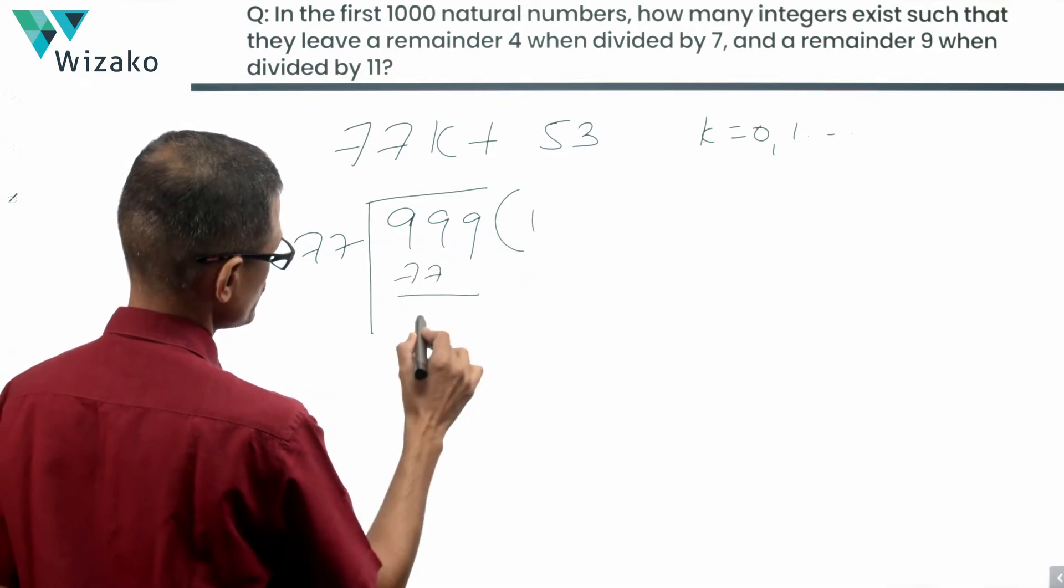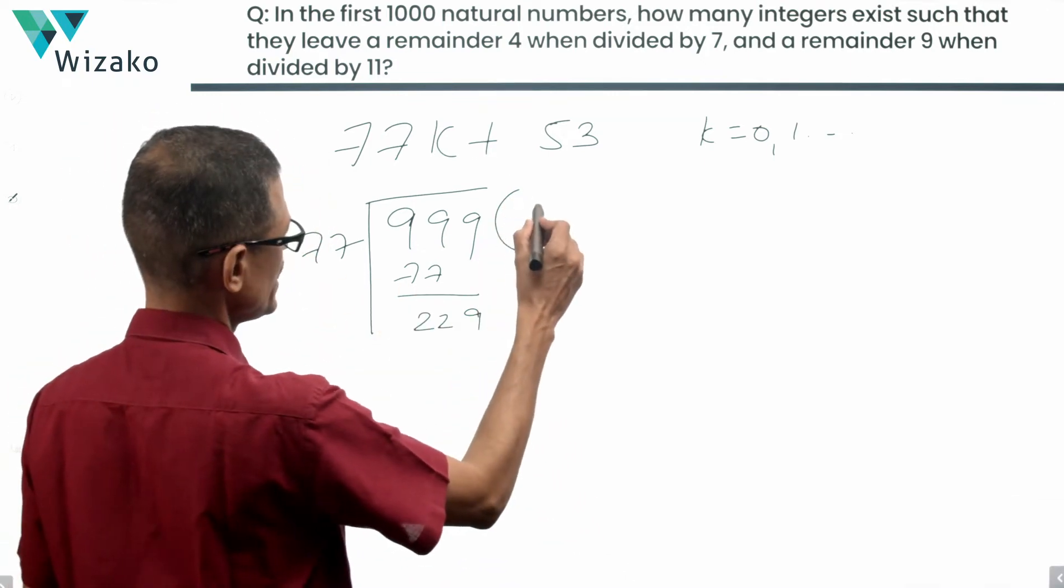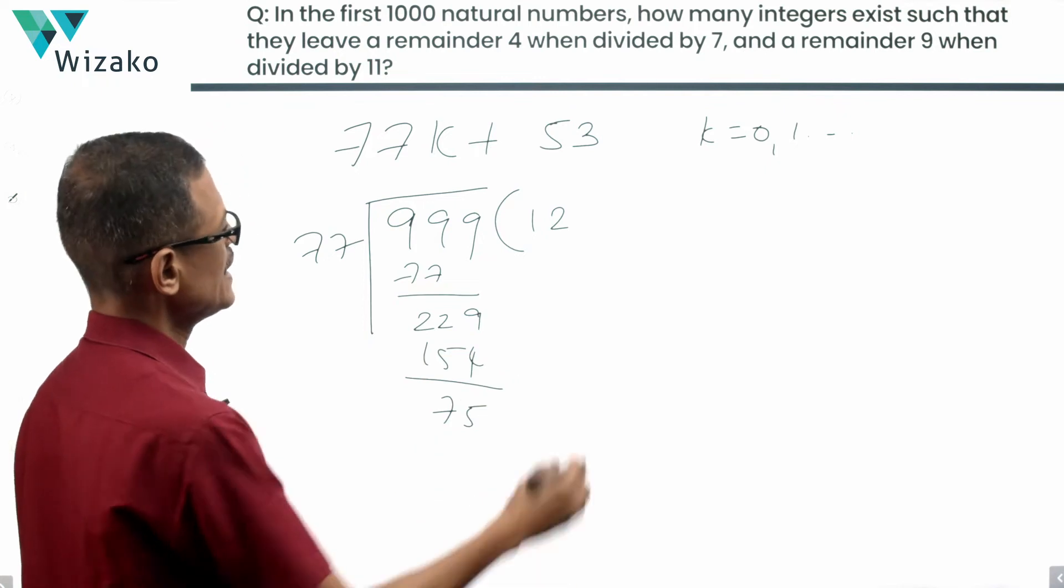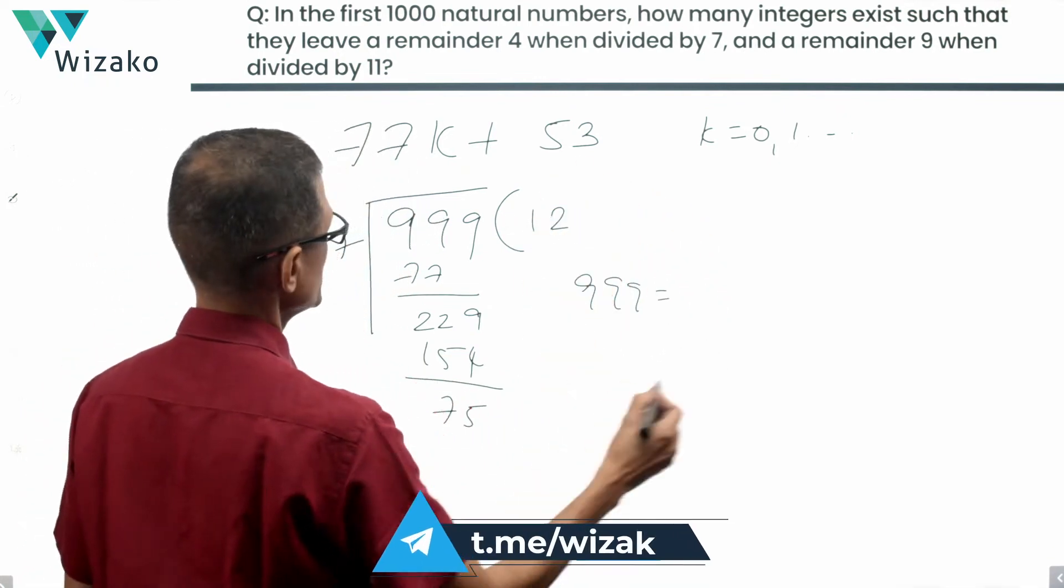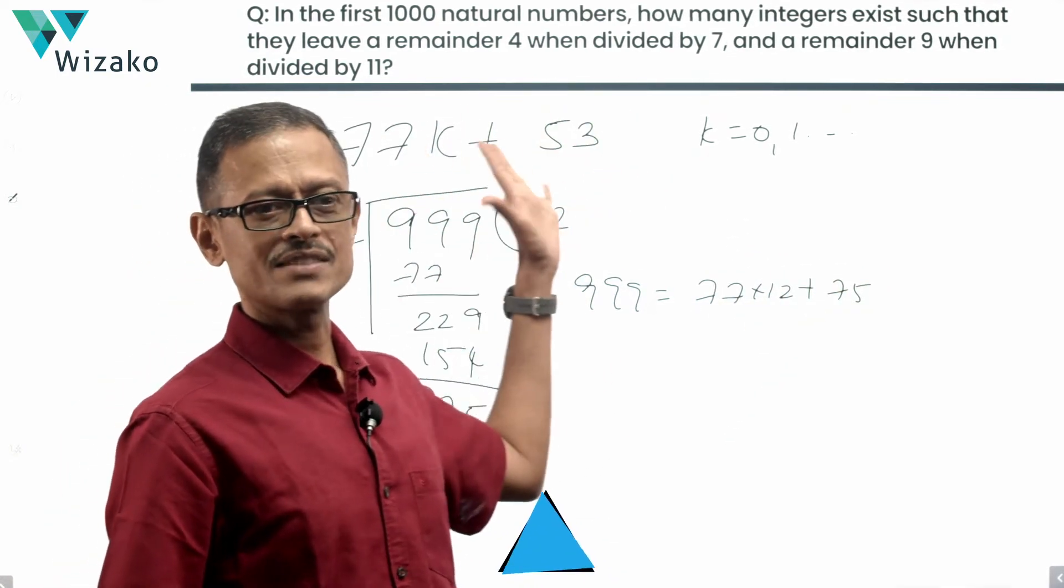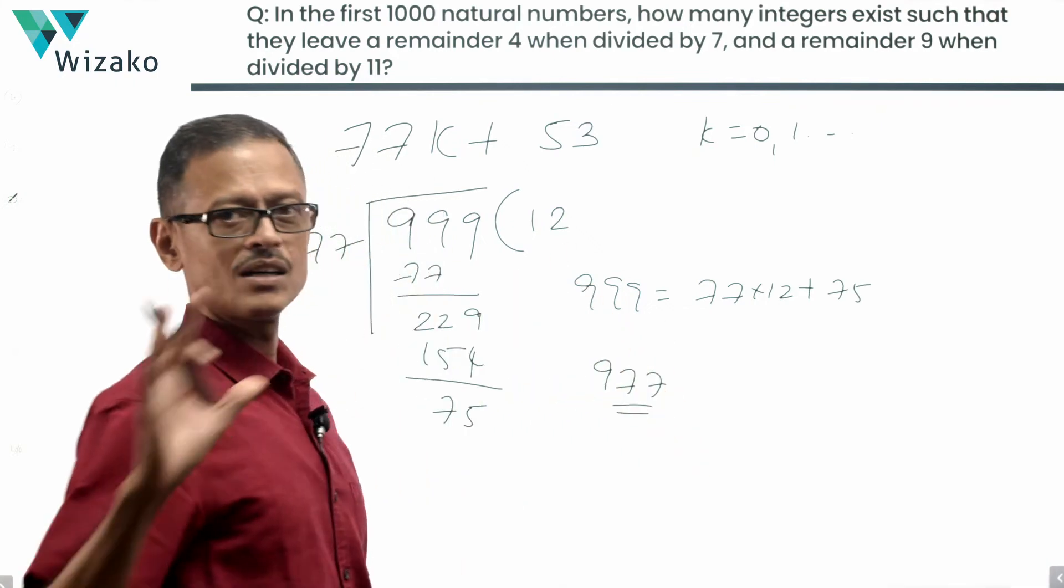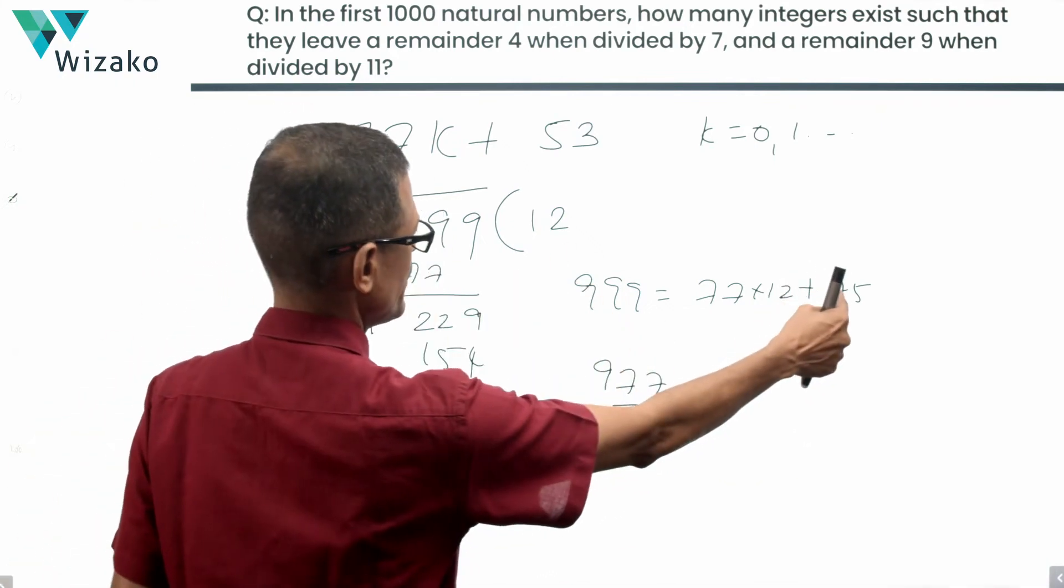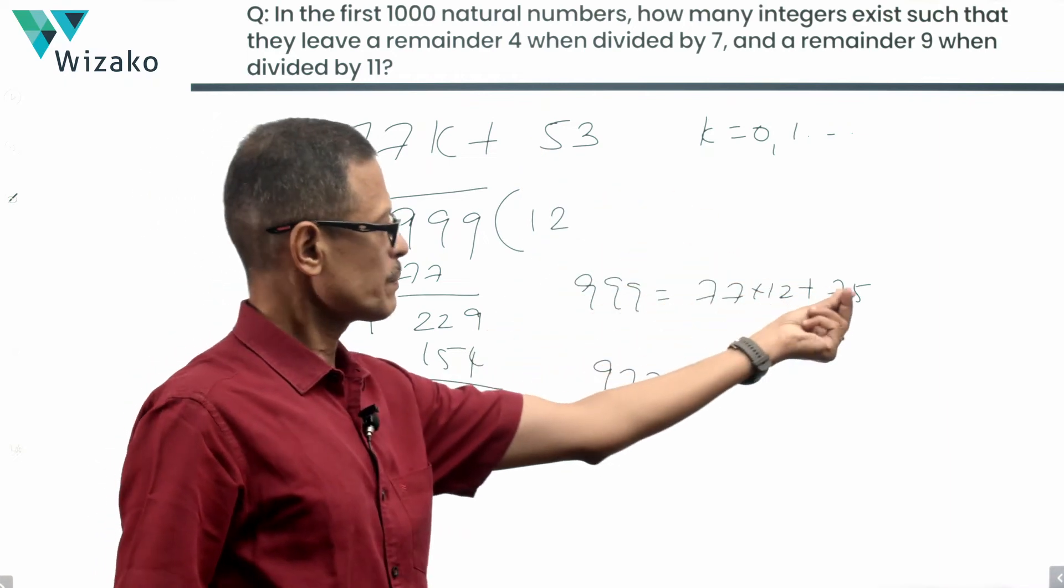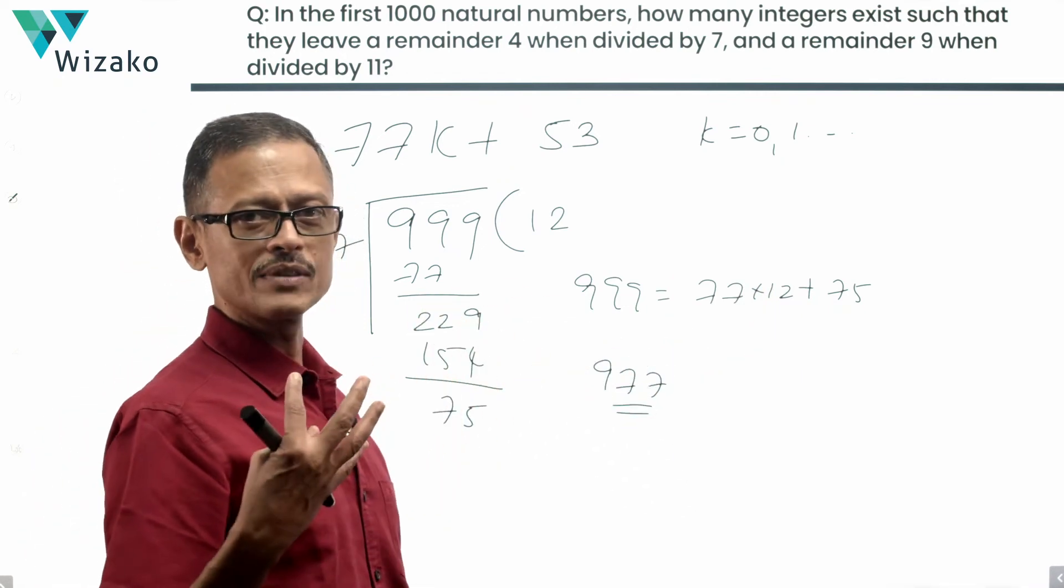Once this will make it 77 leaves us with 22. 229. 77 into 3 is 231. So therefore it will only go two times. Two times this is 154. 231 would have been exactly this. So the remainder of 75 is what we are going to have. 999 is essentially 77 into 12 plus 75. We are looking at numbers which are 77K plus 53. We have 22 more. So subtract 22 from this. 977 will be the last term of the sequence that we are looking at. 75 is 999 is 77 into 12 plus 75. We want 77K plus 53. So subtract 22 from this. You are going to end up with 53. 77K plus 53. So 977 is going to be the last term of the sequence.